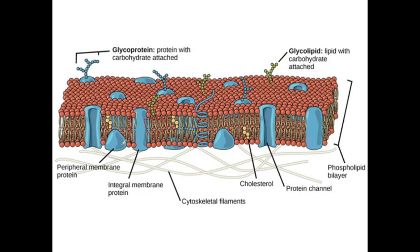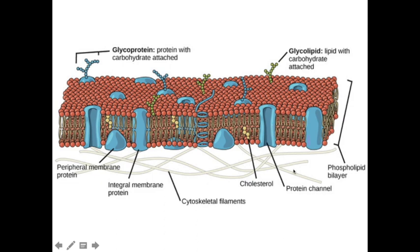Some extrinsic proteins are held by binding to molecules inside or outside the cell or to phospholipids. Many proteins and many phospholipids have branching carbohydrate chains attached to the side of the molecule which faces the outside of the membrane. If a protein has a carbohydrate chain attached to it, it is called a glycoprotein. If a phospholipid has this short branched carbohydrate chain attached, it is called a glycolipid.